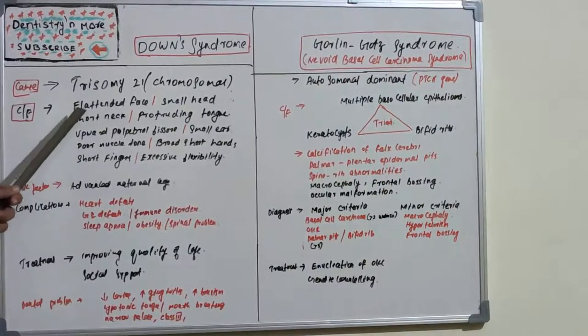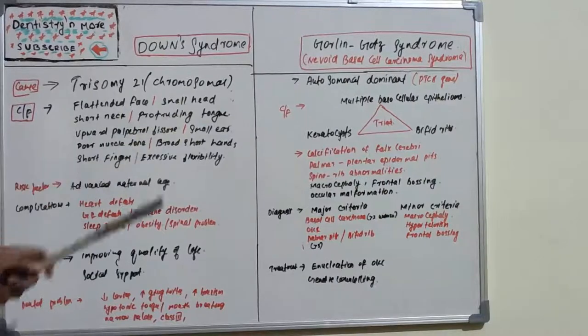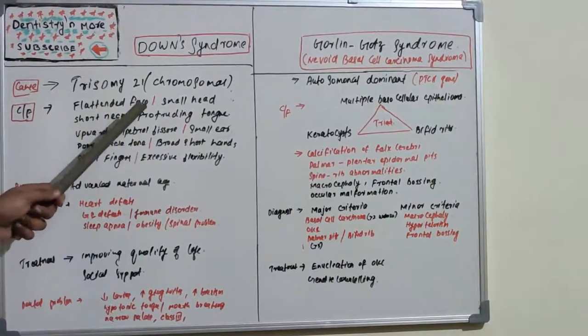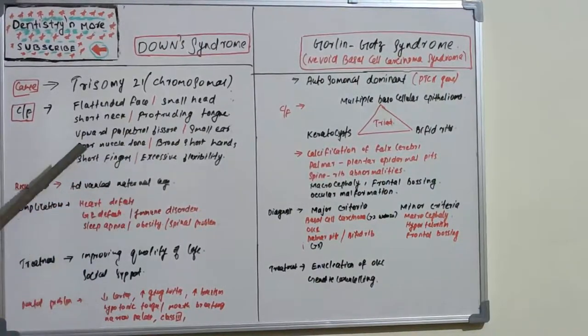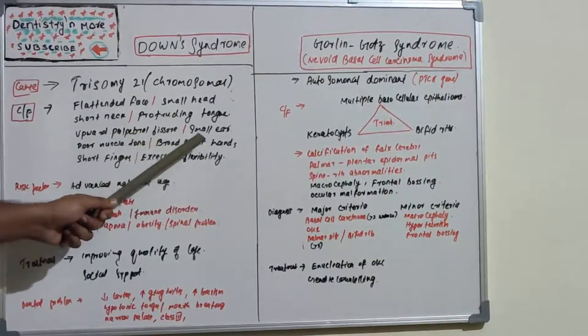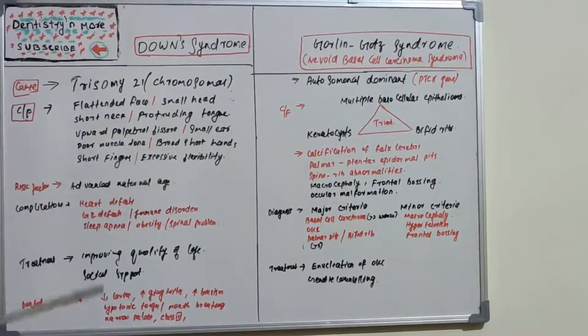Clinical presentation includes flattened face, small head, short neck, protruding tongue, upward palpebral fissure with small ears.